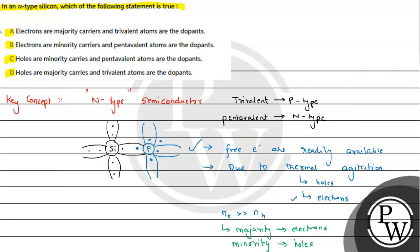Now looking at the options: Option A says electrons are majority carriers — that is correct — but trivalent impurity is not used; pentavalent impurity is used, so Option A is discarded. Option B says electrons are minority carriers — this is discarded. Option C says holes are minority carriers and pentavalent atoms are the dopants — both are correct. Phosphorus is our dopant here. Option D says holes are majority carriers — this is incorrect. So Option C is the answer. I hope you understood the solution — all the best!